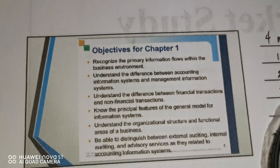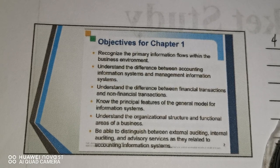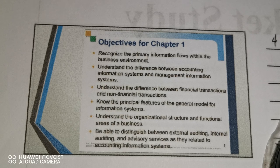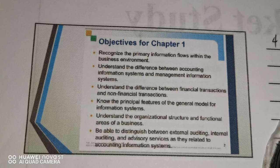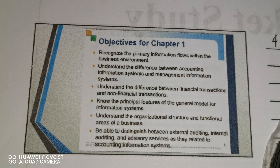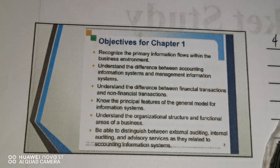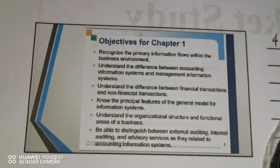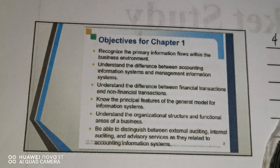The goals of this chapter are: first, to recognize the primary information flows within the business environment; understand the difference between AIS and MIS; the difference between financial and non-financial transactions; know the principal features of the general model for information systems; and understand the organizational structure and functional areas of a business.